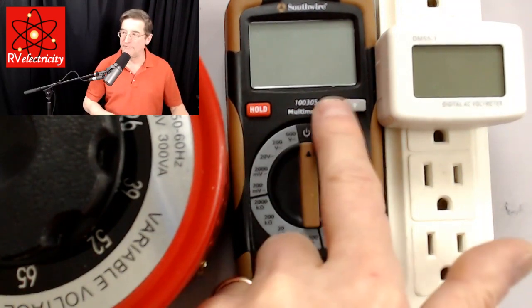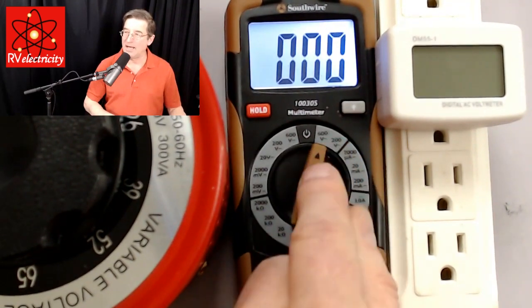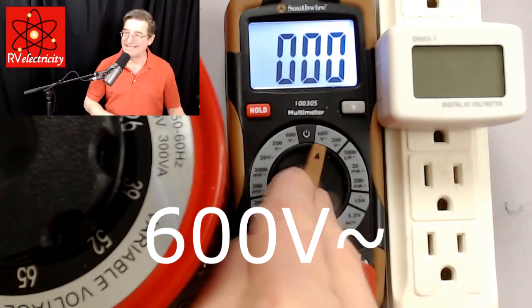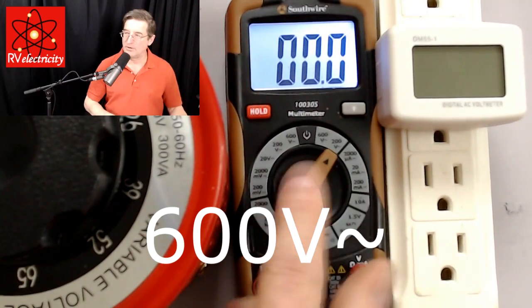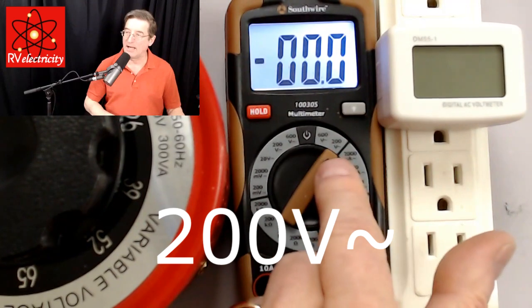Right now this is all turned off. Let me show you the first part of this. Here we have a 600 volt AC scale and a 208 volt AC scale. And you know that it's AC because it's got a little squiggly line.